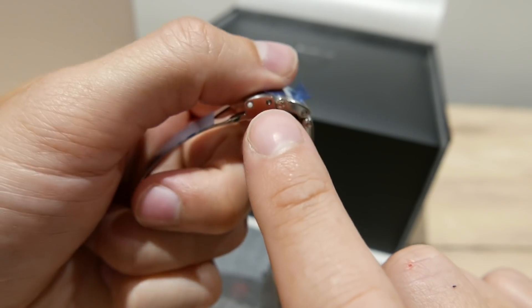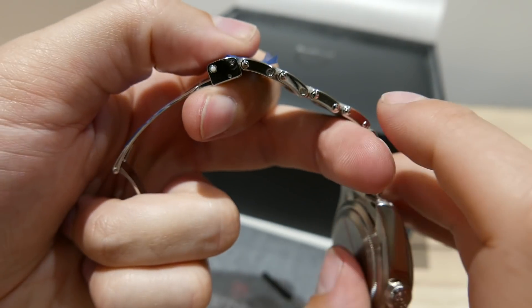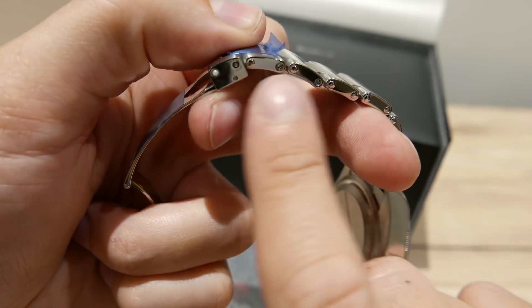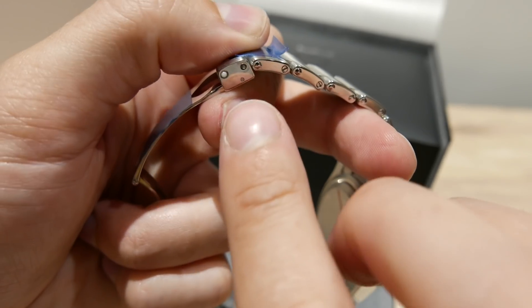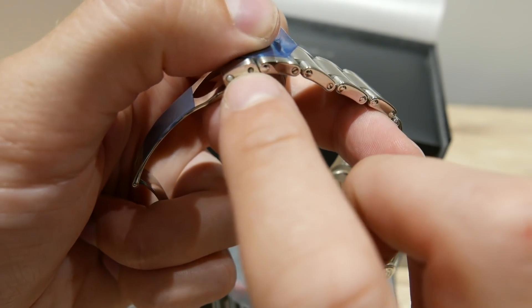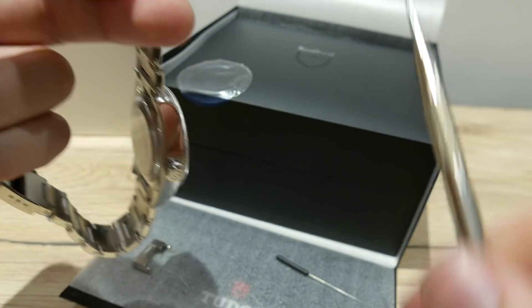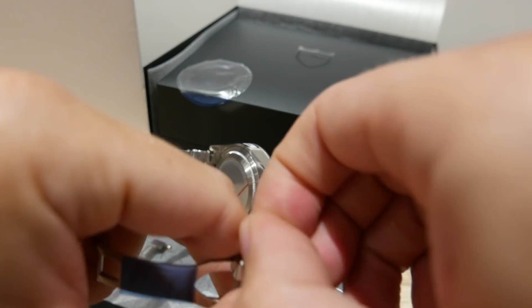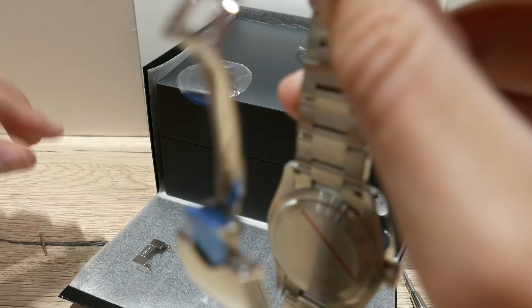Now I'm not going to actually do it. But basically, what would happen is, if I now want to remove both of these links, as I do, I would take that spring bar out. Okay, so I'll do that bit. Spring bar out. And then you will see what happens.